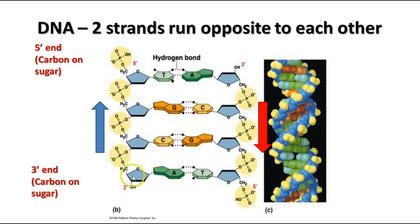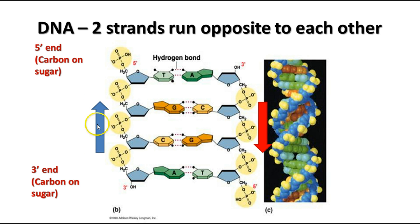The two strands of DNA run in opposite directions. The carbons in the sugar are numbered starting from the oxygen going clockwise — one, two, three, four — with the fifth carbon attached to the phosphate. One side of the strand runs from 3' to 5', and the other runs 3' to 5' in the opposite direction. This antiparallel orientation is significant in the way DNA is read during transcription and replication.